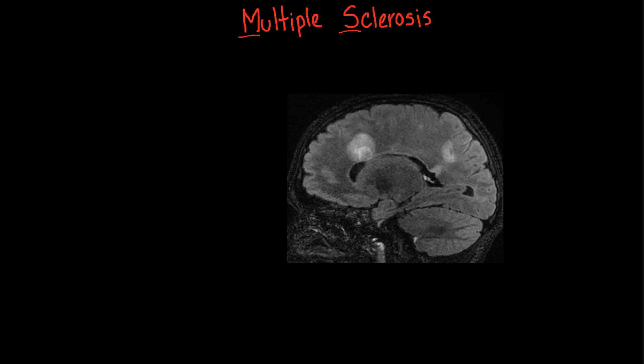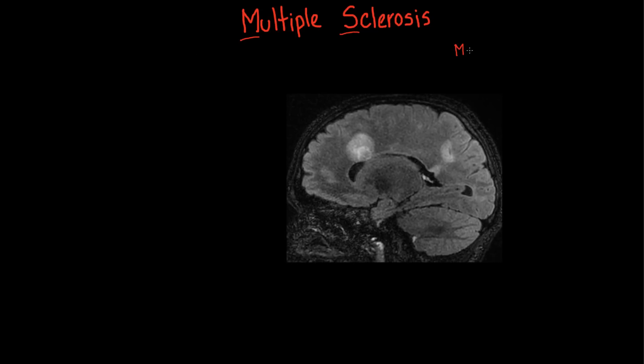If we have somebody come in and they have the kinds of symptoms that we would expect to see with multiple sclerosis, we'll often do imaging of different parts of the nervous system. This is a scan of a person's head, and the type of scan is called an MRI scan, which is short for magnetic resonance imaging. There are lots of different types of images that you can make with an MRI scanner, and this is just one of them.